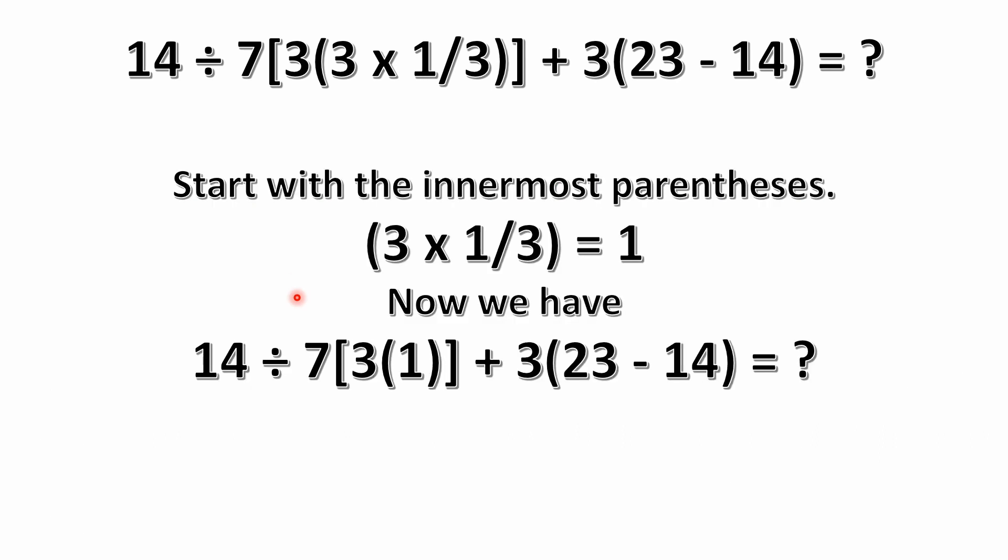So as you look through this problem, we would normally just go ahead and start with the innermost parentheses, which is where we have the 3 multiplied by one third. Well, this is pretty easy so far. 3 multiplied by one third equals 1. So now we're left with a little simpler problem. It's 14 divided by 7, and then that's multiplied. This is implicit multiplication.